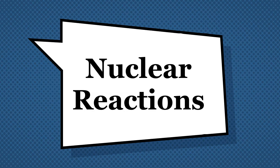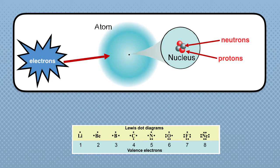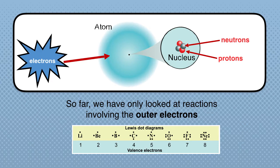This presentation covers nuclear reactions. If we're looking at an atom, we see that the electrons are in the outermost orbital. Within the atom is the nucleus, and the nucleus contains the neutrons and the protons. So far, the only thing we've looked at is the outermost electrons.